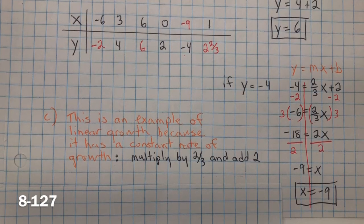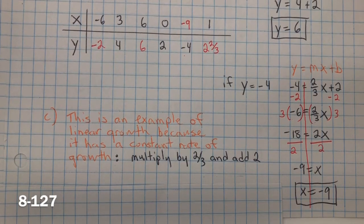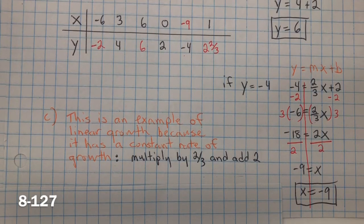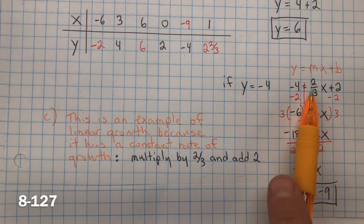Part C is asking, is this an example of linear or non-linear growth? And this is an example of linear growth because it has a constant rate of change, which was two-thirds.